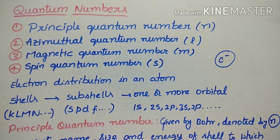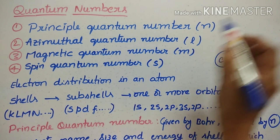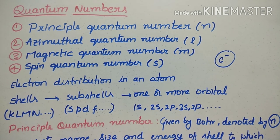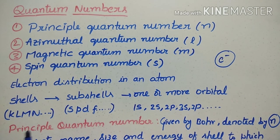We have four identification numbers: the principal quantum number, the azimuthal quantum number, the magnetic quantum number, and the spin quantum number. Using these, we can describe the electron distribution in an atom.